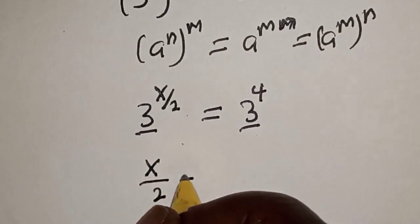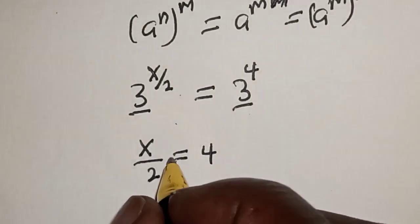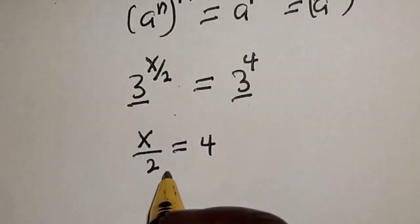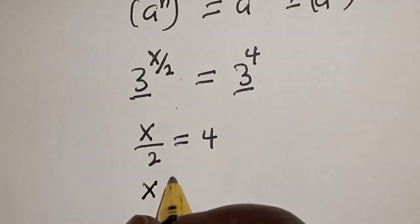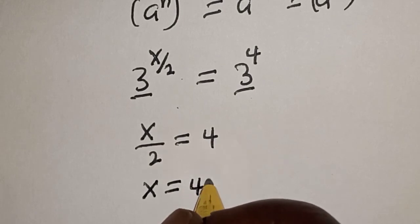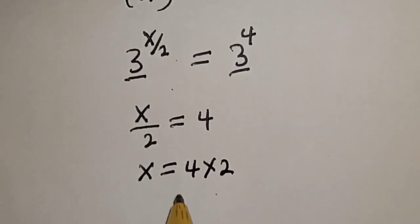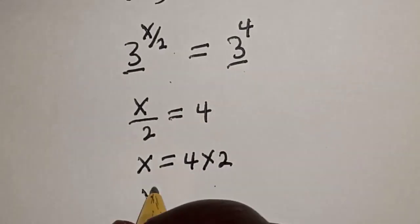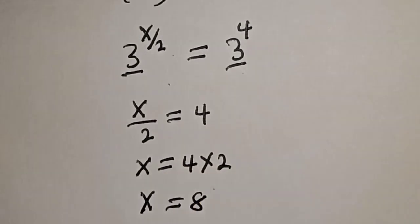They have the same base 3, so s over 2 is equal to 4. Now let's cross multiply: s is equal to 4 multiplied by 2, so s is equal to 8. That is our final answer.